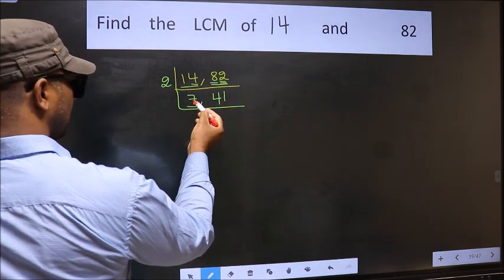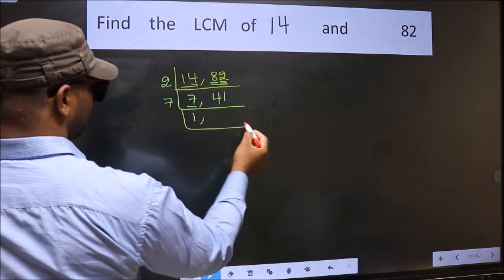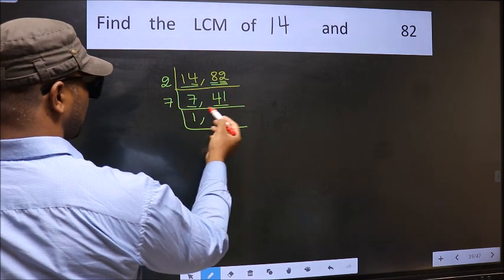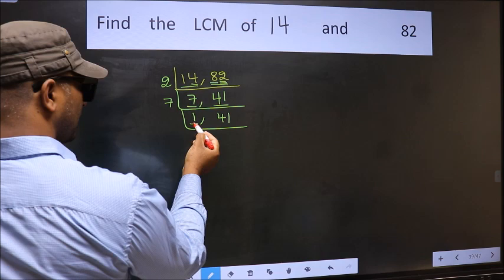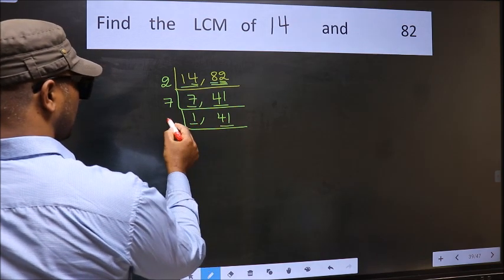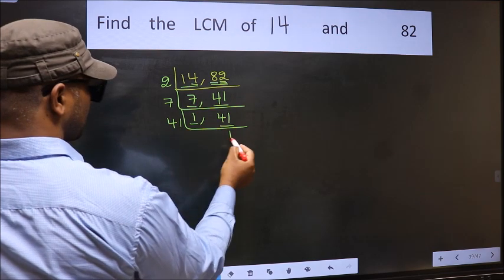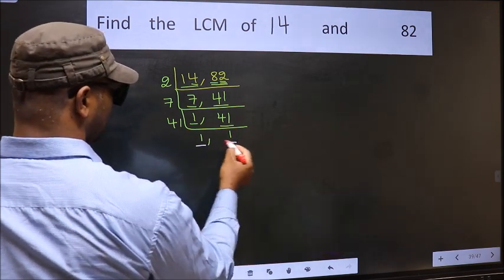Now here we have 7. 7 is a prime number so 7 1s 7. The other number 41, not divisible by 7, so we write it down as it is. We got 1 here. So focus on the other number 41. 41 is a prime number so 41 1s 41. So we got 1 in both the places.